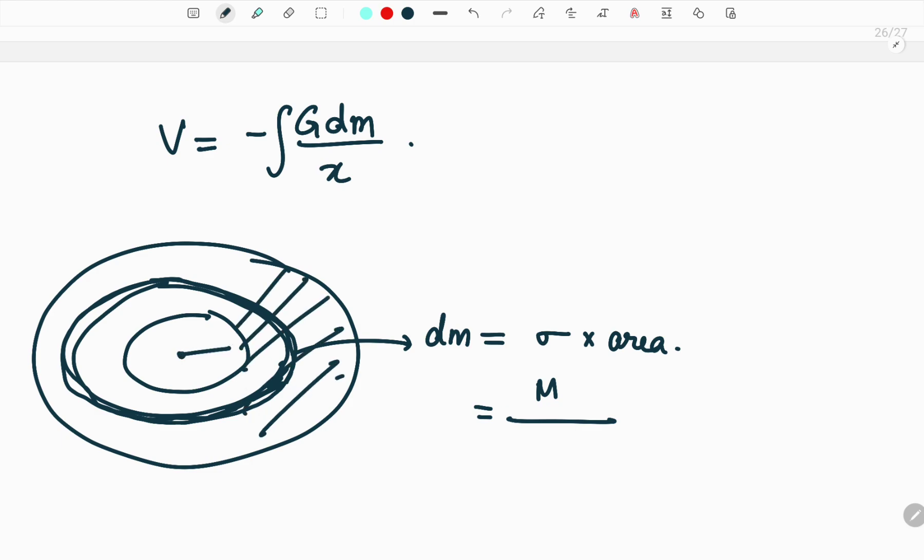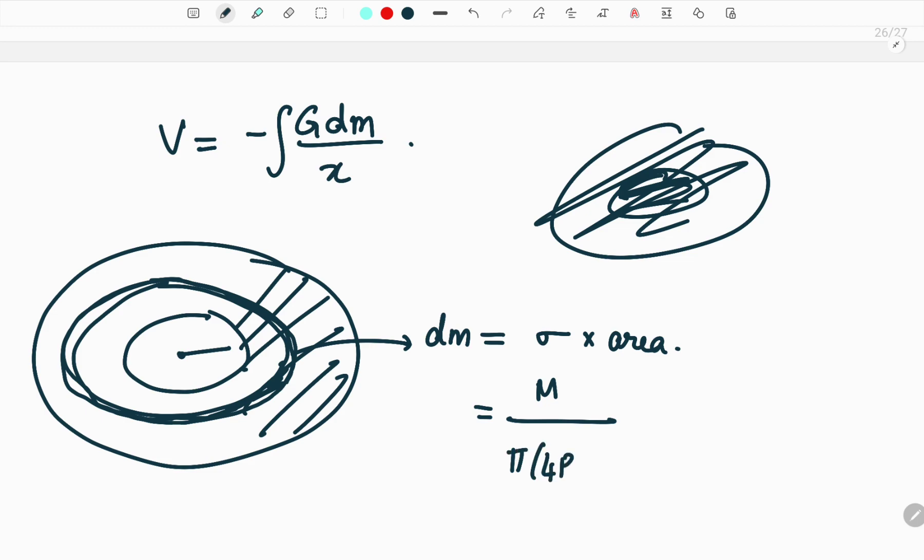So this is the portion that is present. So the full area minus the area cut in the middle. So the full area will be π into 4r the whole square minus π into 3r the whole square. So that will be the total area.